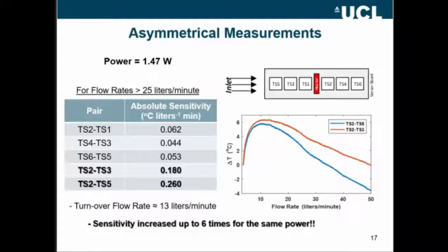So we move to asymmetrical ones, the asymmetrical measurements. We kept the TS2 temperature sensor, which is the closest to the heater at the downstream, and we used the TS3 and TS5, which are the asymmetrical ones at the upstream.